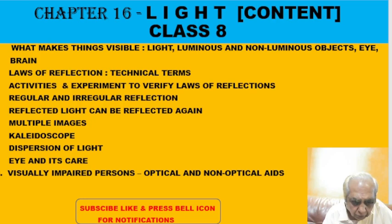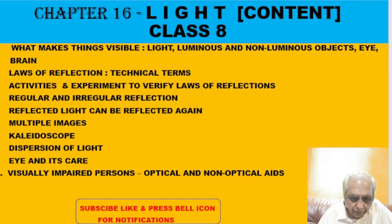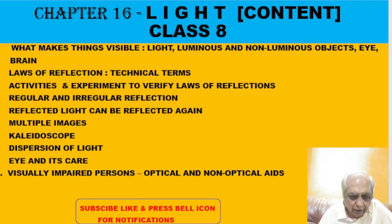Hello students, today we will start a fresh chapter called light. Light is a sense — we can see objects around us using our eyes, but if I switch off all the lights, we will not be able to see those objects. There is no light falling on the objects and reflecting into our eyes. For us to see objects, either light should come directly from them — like the sun, flame, or torch — or light should fall on objects, get reflected, and enter our eye.